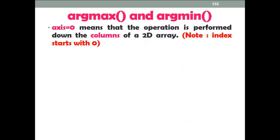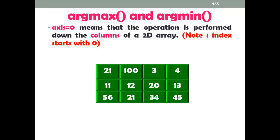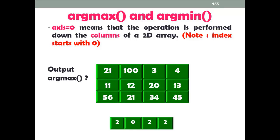Axis 0 means that the operation is performed down the columns of a 2D array. Please note that the index starts with 0. Here you can see a 2D array. The output of argmax with axis 0 is: 2, 0, 2. This is column-wise. There are 4 columns — indexed 0, 1, 2, and 3 — so there are 4 output values. The maximum value of the first column is available at index 2.